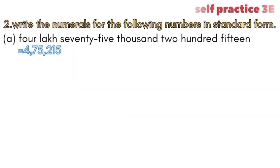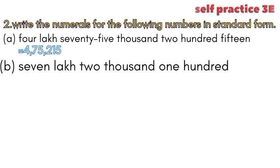Question 2. Write the numerals for the following numbers in standard form. A. four lakh seventy-five thousand two hundred fifteen: 4,75,215.